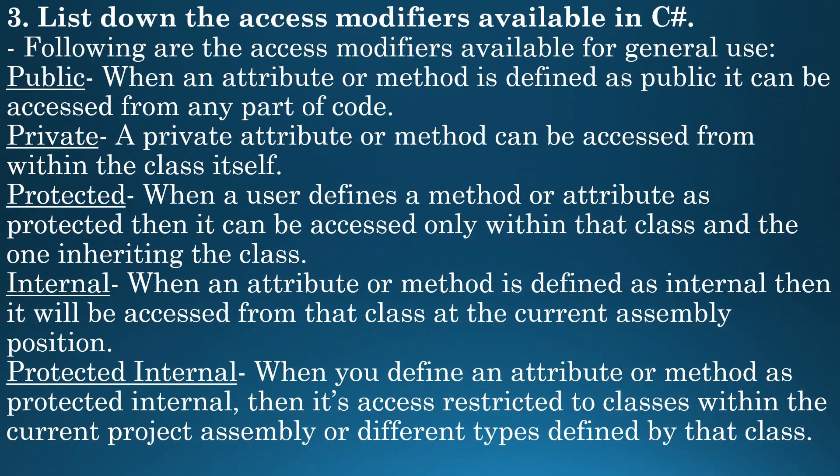Question 3: list down the access modifiers available in C-Sharp. Following are some of the access modifiers available for general use. First is public — when an attribute or method is defined as public, it can be accessed from any part of code. Next is private — a private attribute or method can be accessed from within the class itself.